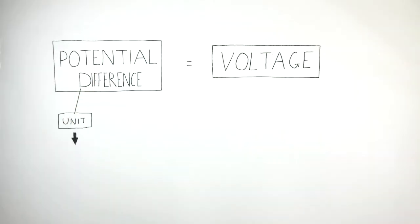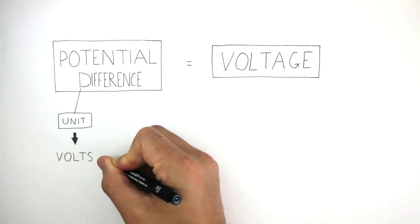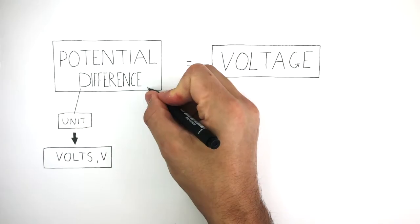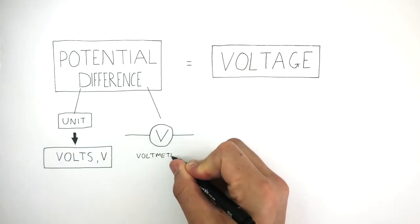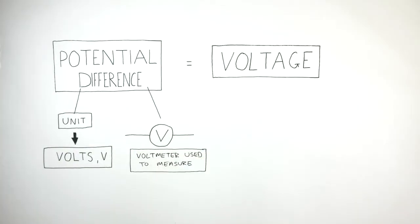The unit of potential difference is volts, which has a symbol of V. This is the symbol of the voltmeter. The voltmeter is used to measure the potential difference and is always connected in parallel.